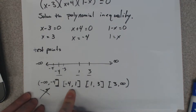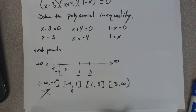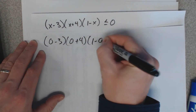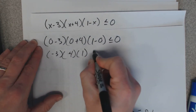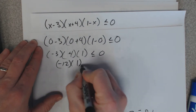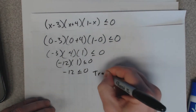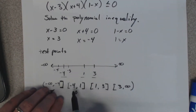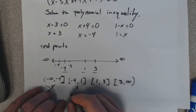Let's pick a number within the second interval, [−4, 1]. I like to use zero — it's easy to work with. Plugging zero in gives negative 3 times 4 times 1, which equals negative 12. Negative 12 is less than or equal to zero — that's true! So any number I pick within this interval will work in the inequality, meaning this interval is part of our answer.